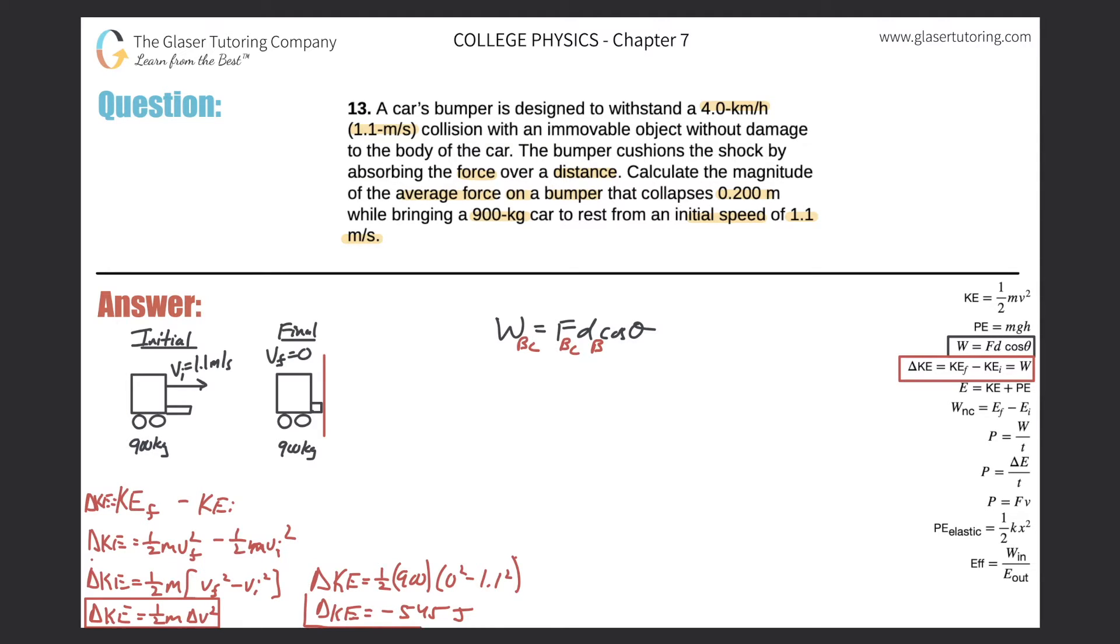So negative 545, and that's in terms of joules. Now this result should make sense. Think about this. We're talking about the car here. So let me write down the subscript of the car. This is the car. So the change in kinetic energy of the car is negative 545 joules. Remember, it had some velocity initially, and then it has now no velocity. So the kinetic energy, which is the measure of energy of motion, changed in a negative fashion. It went from something to nothing. So the value should be negative.